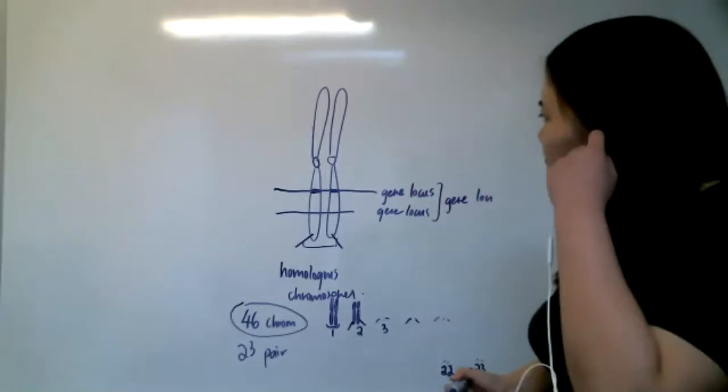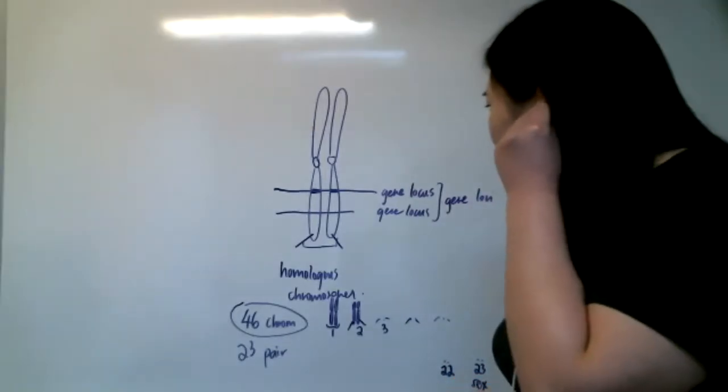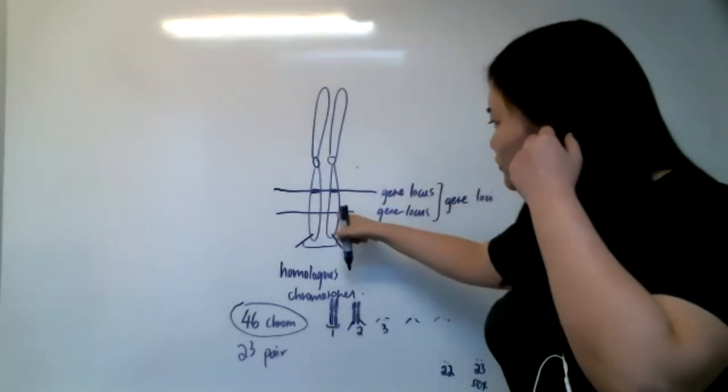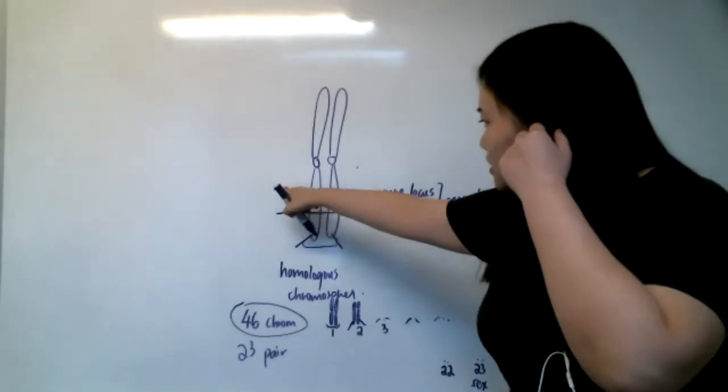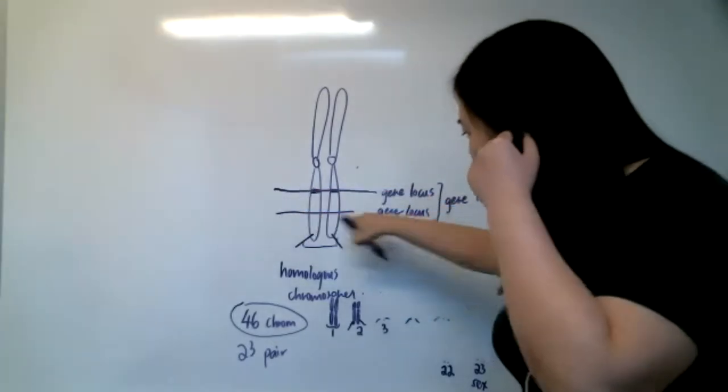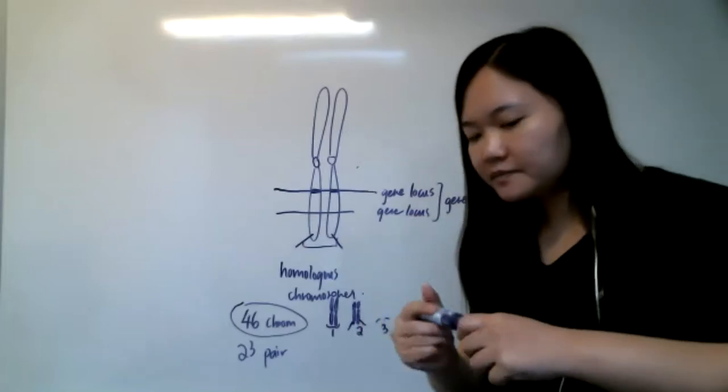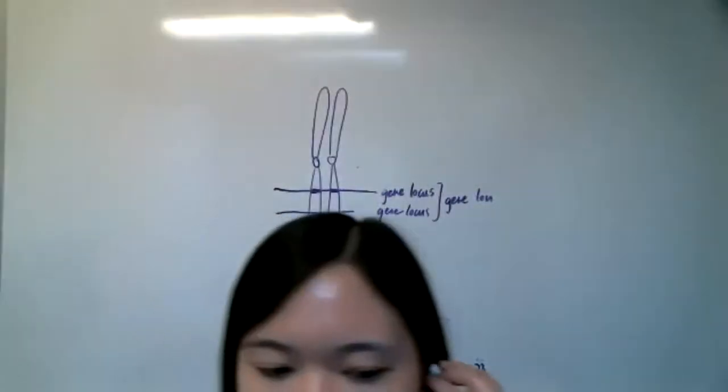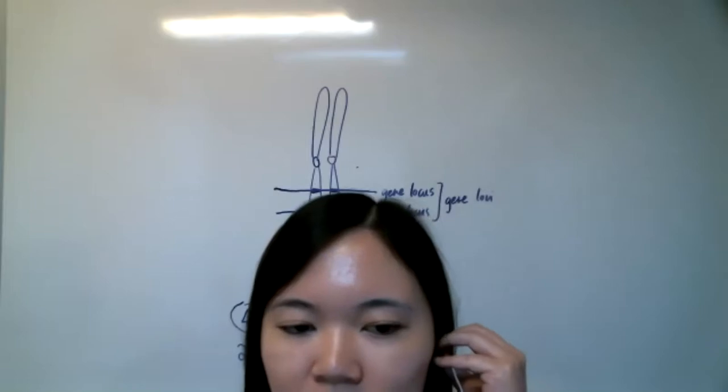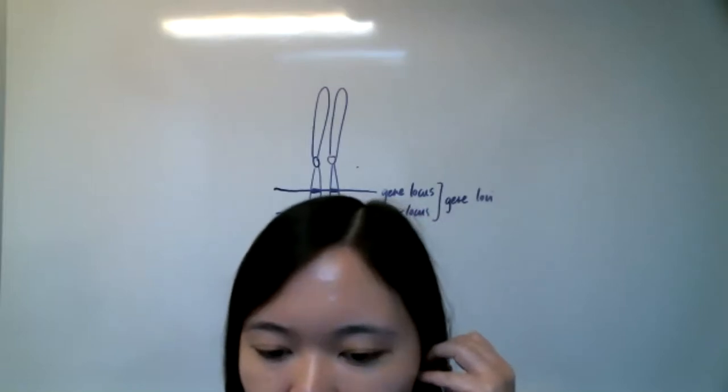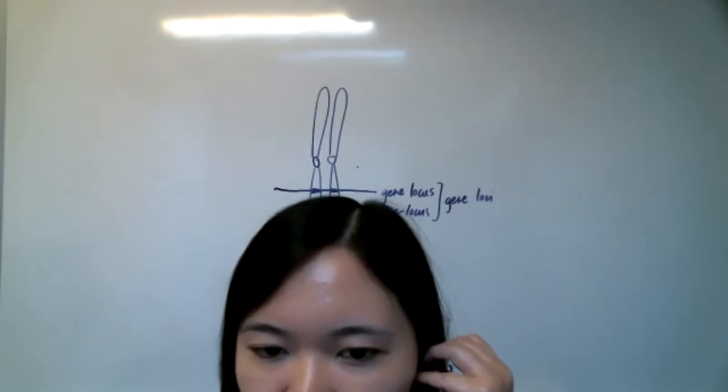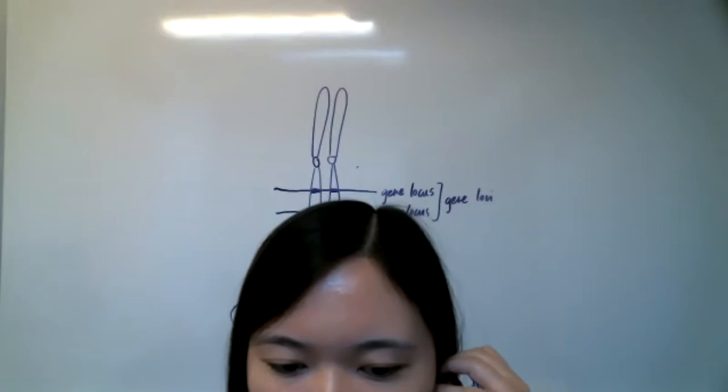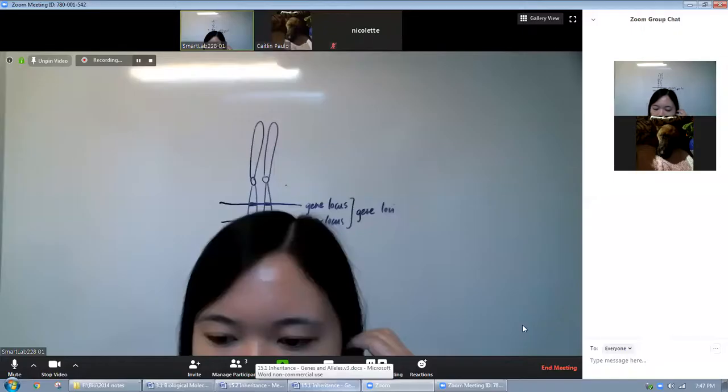So basically, this is a gene. This is one gene, two genes, three genes, four genes. This is one gene locus, two gene loci. Simple as that? Okay, let's come back to the next part. Right now, I need to share screen first.